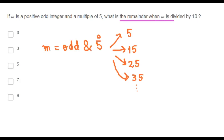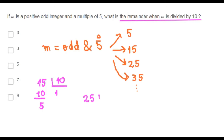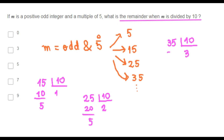We need to find the remainder when m is divided by 10. If m is 15, the remainder when m is divided by 10 is 5. If m is 25, the remainder when m is divided by 10 is also 5. If m is 35, the remainder when m is divided by 10 is also 5.